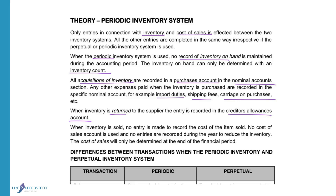When inventory is sold, no entry is made to record the cost of the item sold. No cost of sales account is used in the periodic inventory system. The cost of sales will only be calculated at the end of the year, using a calculation that takes opening inventory plus purchases less closing inventory to determine the cost price of all goods sold.